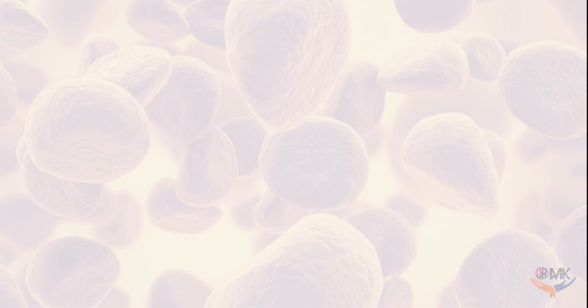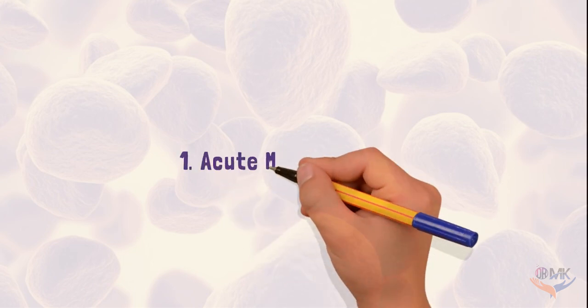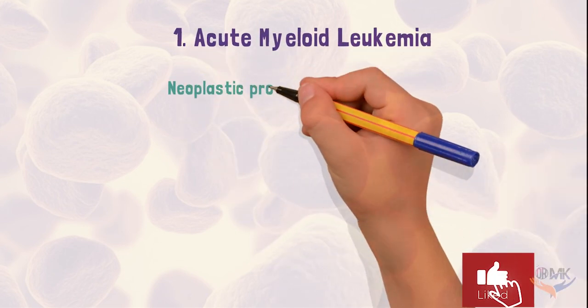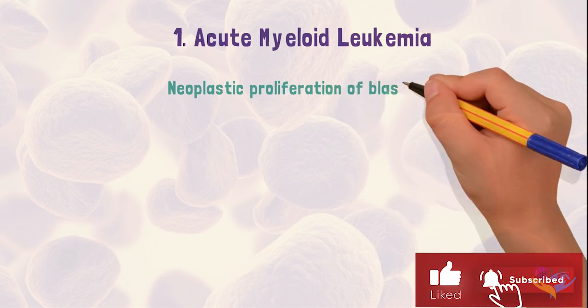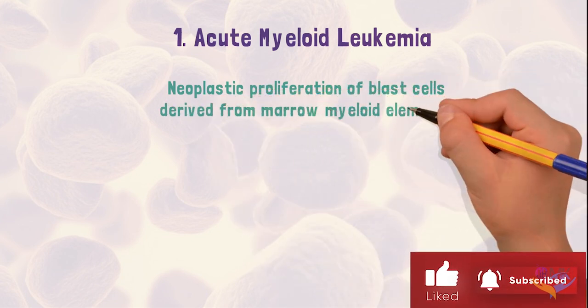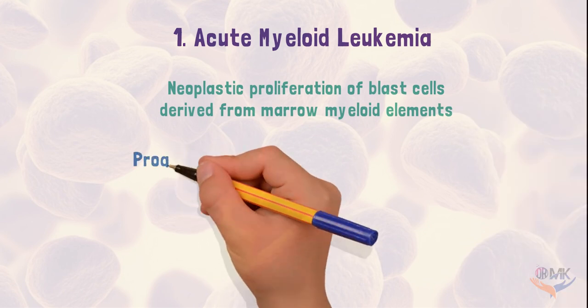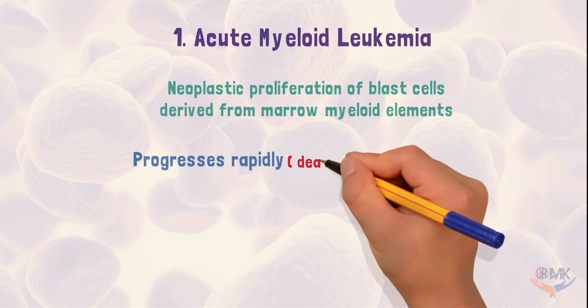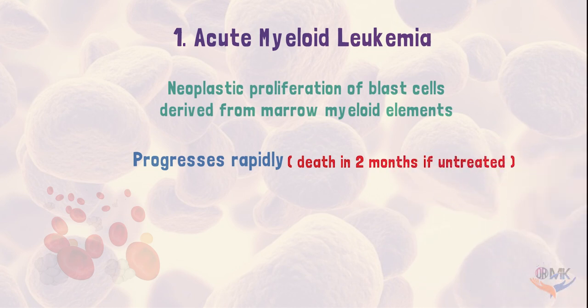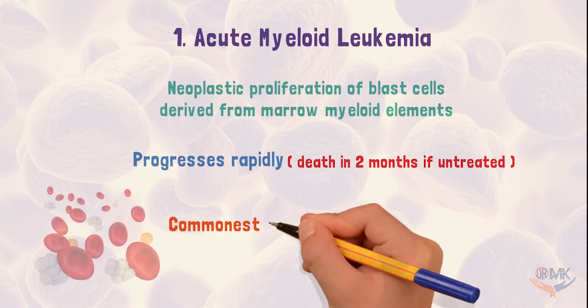Now we will discuss each type of leukemia separately in detail. Acute myeloid leukemia is defined as neoplastic proliferation of blast cells derived from marrow myeloid elements. This type of leukemia progresses very rapidly and could result in death of the patient within two months if left untreated. It is most common in adults.